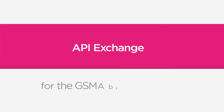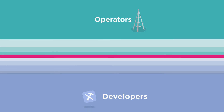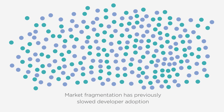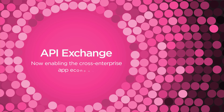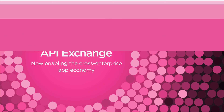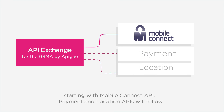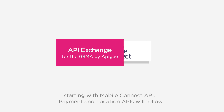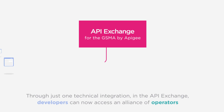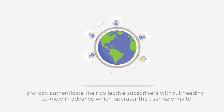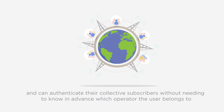Behind the scenes, it's the API Exchange which brings developers and operators together to interoperate. Previously, market fragmentation has slowed developer adoption. Today, the API Exchange will enable the cross-enterprise API app economy to thrive, starting with the MobileConnect API. Payment and location APIs, or a mashup of these, will follow. Through just one technical integration in the API Exchange, developers can now access an alliance of operators and authenticate their collective subscribers without needing to know in advance which operator the user belongs to.